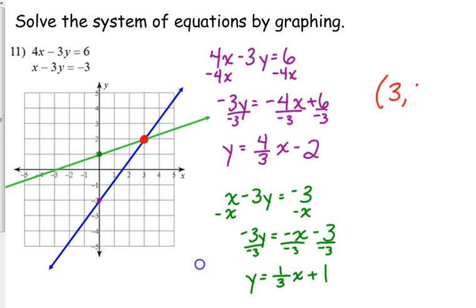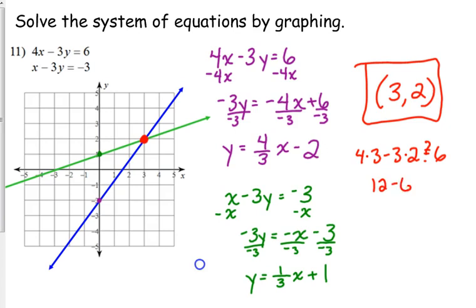So that is our solution. The point 3, 2 is the solution. Now what does that mean? That means that when x is 3 and y is 2, both of these equations are true. The first one is going to equal 6, and the second one is going to equal negative 3. So that's a really easy way that you can check these. All you have to do is plug in 3 for x and 2 for y and make sure that it works. So in the first one, 4 times 3, let me write it out, 4 times 3 minus 3 times 2. The question is, does that equal 6? 12 minus 6. Yeah, that equals 6. We plug it into the other one. 3 minus 3 times 2. Does that equal negative 3? 3 minus 6. Yeah, that equals negative 3. So that is the correct answer. 3, 2 is the solution to this system of equations, and we did it by graph.